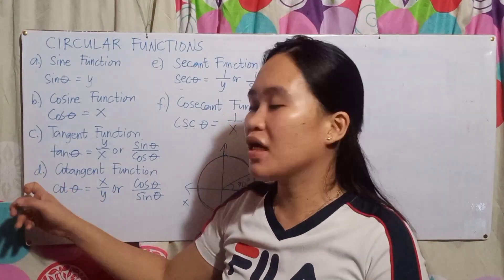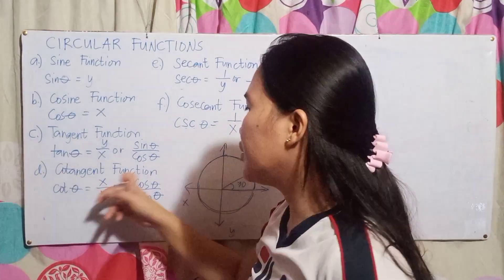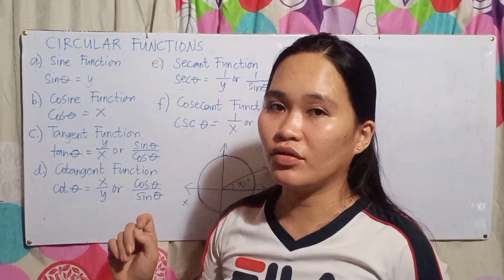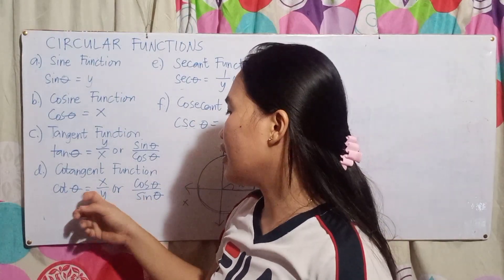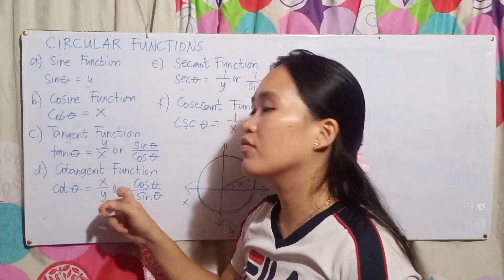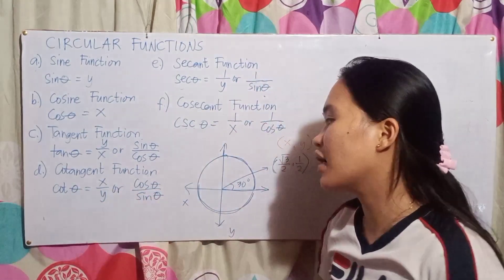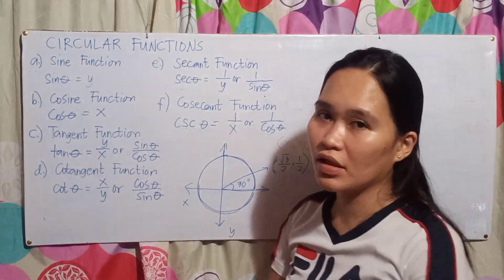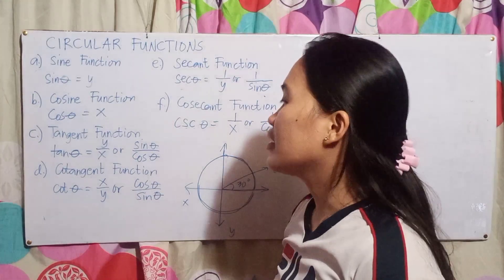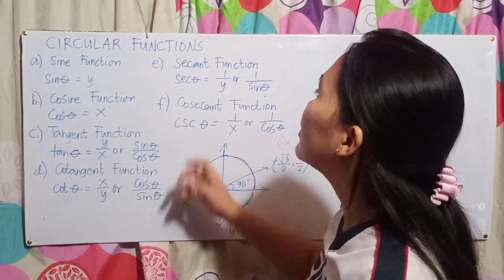Letter D is the cotangent function. So, cot theta equals x over y, or cos theta over sine theta.